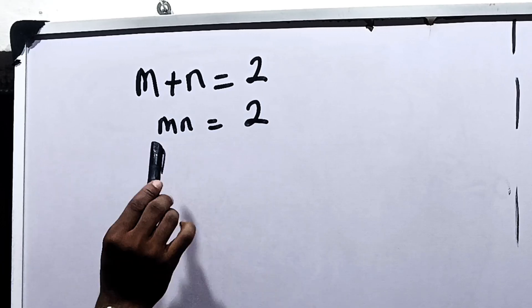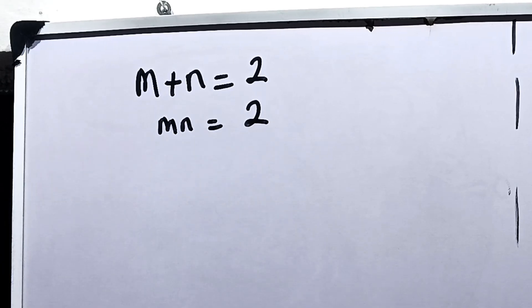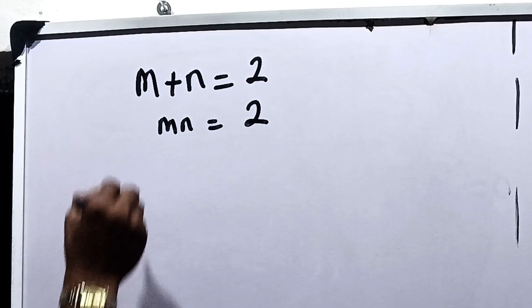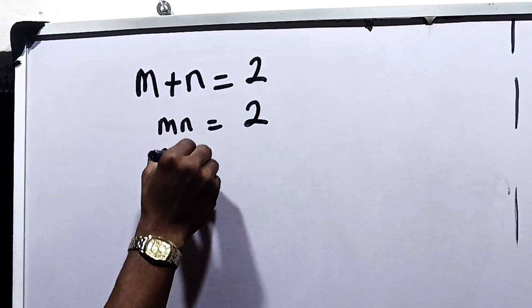Let's solve this together. It says m plus n is equal to 2 and mn is equal to 2. Solve for the value of m and n in this equation.